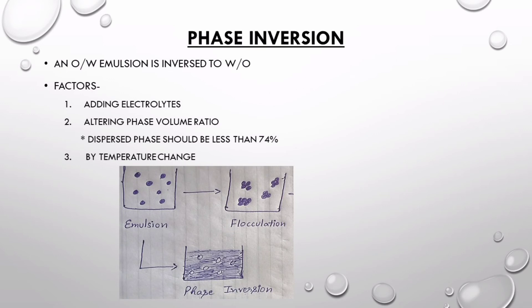Next is phase inversion. In phase inversion, one form of emulsion converts into another type — for example, an oil-in-water emulsion is converted into a water-in-oil emulsion. One factor that can cause phase inversion is the addition of electrolytes: if your emulsion is stabilized by an ionic surfactant and electrolytes are added, due to neutralization of charges there will be phase inversion.